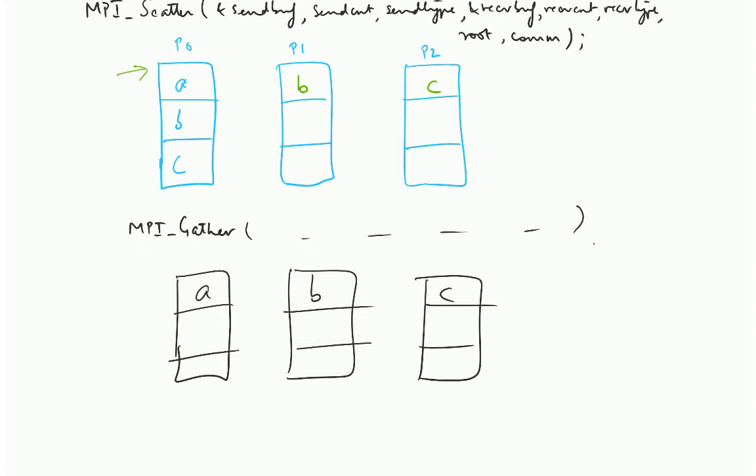At the end of the call you would end up with B and C over here. It would gather data from all the processors to a single processor.